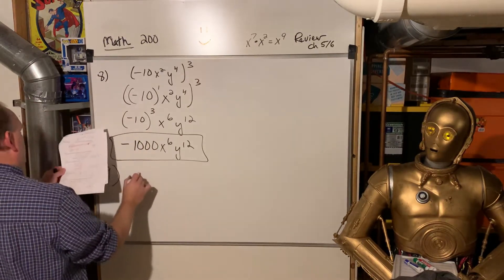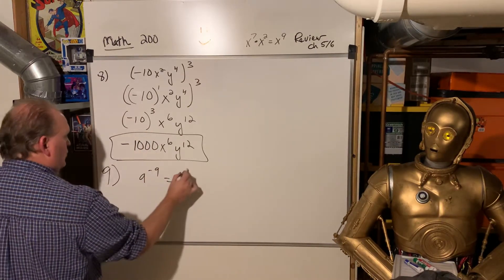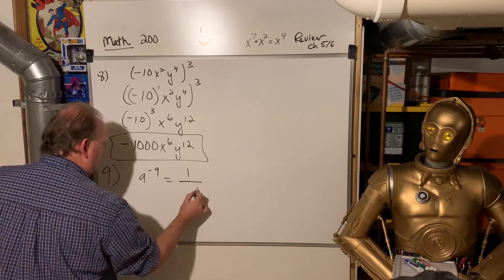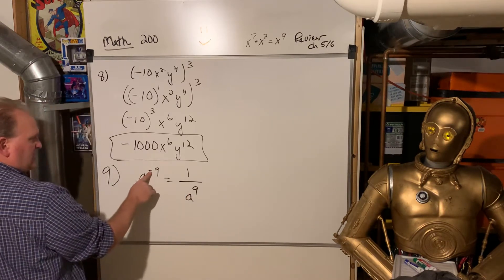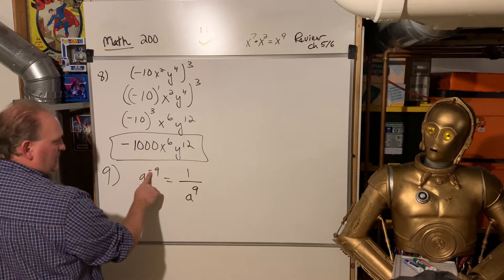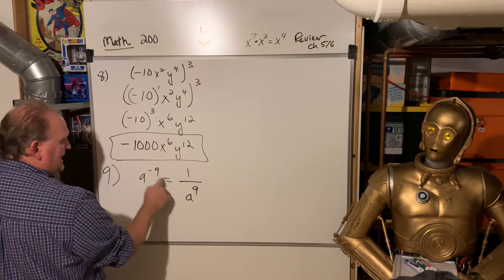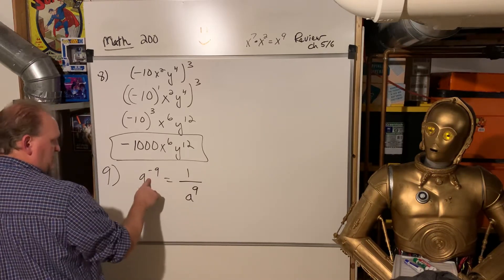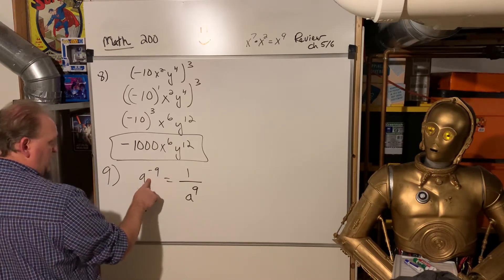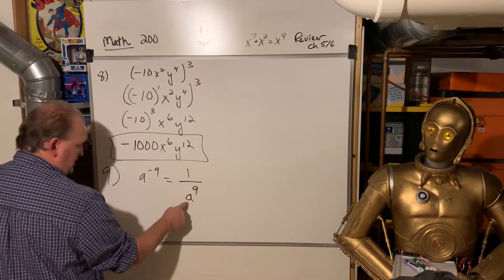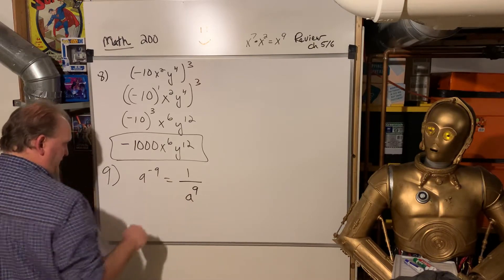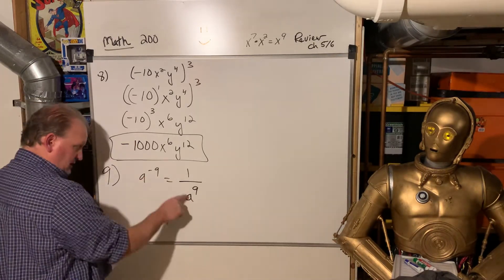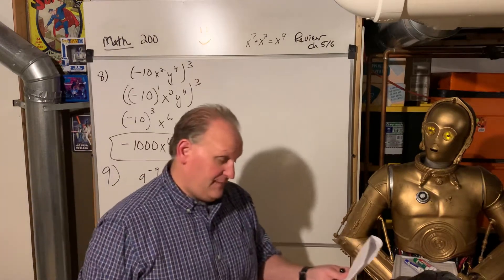Number 9 is quick: a to the negative 9 is just 1 over a to the 9th power. A negative exponent means you don't change the sign — you change the position in the fraction. If it's in the numerator, it gets moved to the denominator and then you make the exponent positive. Like the price of shipping is the negative sign.